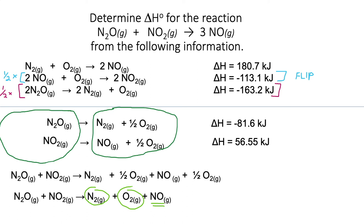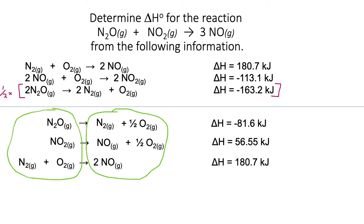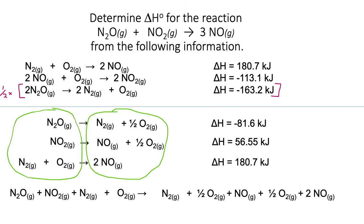Now we can look at the third equation and say: how can I do this? I want more NOs on the product side, and I want N2 and O2 on the reactant side so they cancel out the unwanted N2 and O2 on the product side. So let's take that top equation and write it as it is.